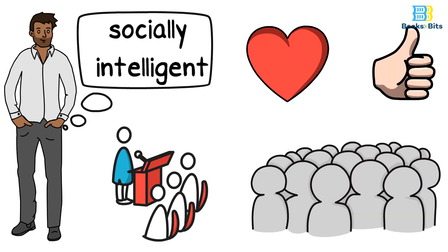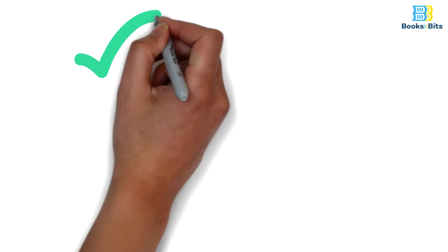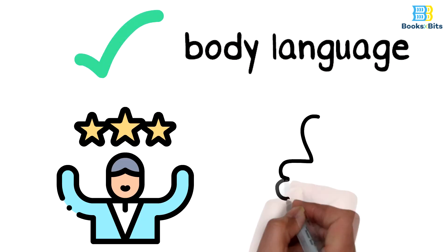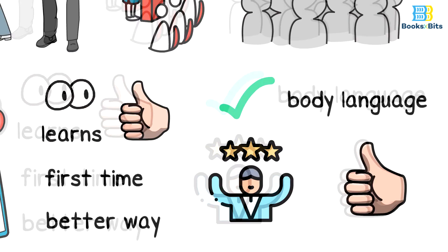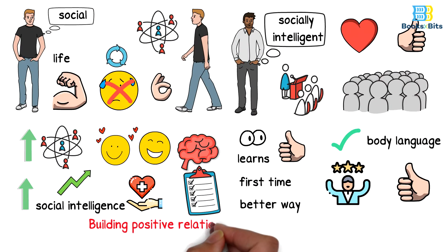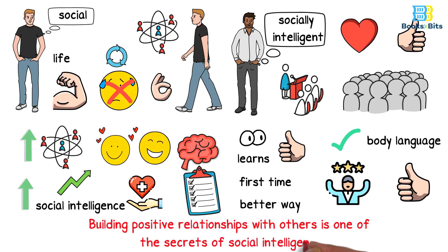To achieve this, it is necessary to be sure of the body language used, to act confident and positively, and to increase the trust in you. Bit to remember: building positive relationships with others is one of the secrets of social intelligence.